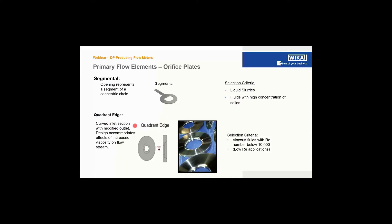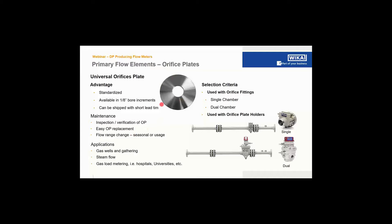The quadrant edge orifice plate is designed for viscous flow measurement, with a curved inlet section and modified outlet section accommodating highly viscous flow. It's used for viscous flows up to Reynolds number 10,000 or less. The universal orifice plate is a standardized version, available in sizes 2 through 10 inch in one-eighth inch increments. If you don't need the exact calculated bore size, you can use the next eighth-of-an-inch size. Such plates are readily available, fairly inexpensive, and can be ordered quickly.